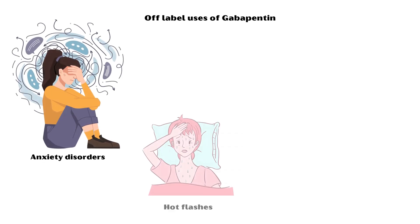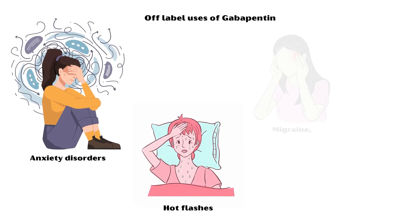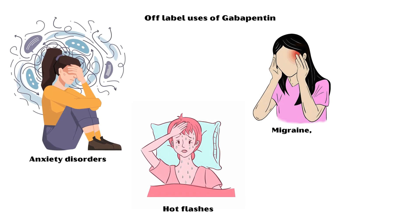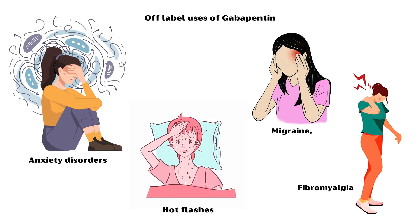Off-label uses of gabapentin include treatment of anxiety disorders, hot flashes, migraine, and fibromyalgia.